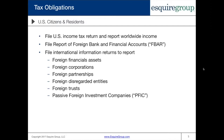The third category is international information returns. These are either submitted with your personal tax return as an attachment, or filed independently. These include forms such as Form 8938 to report foreign financial assets, forms for foreign corporations, foreign partnerships, foreign disregarded entities, foreign trusts, and passive foreign investment companies (PFICs) — each with their own informational return requirements.